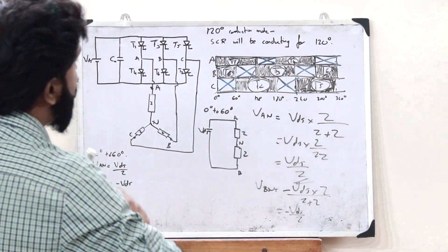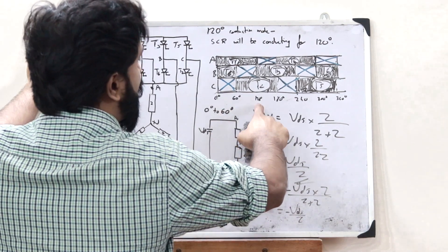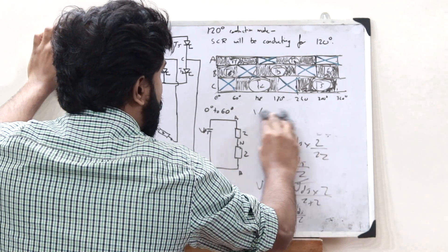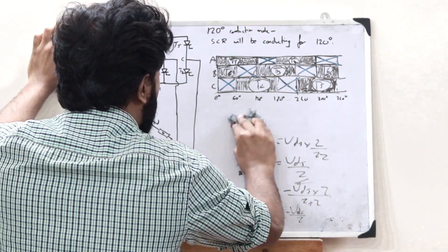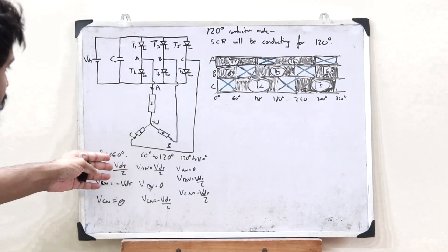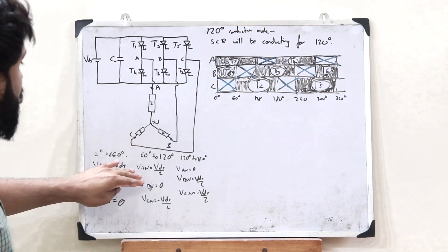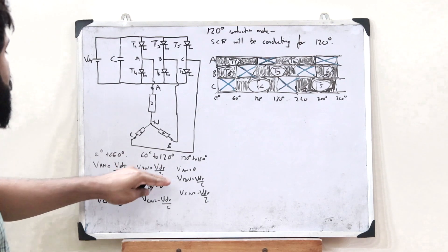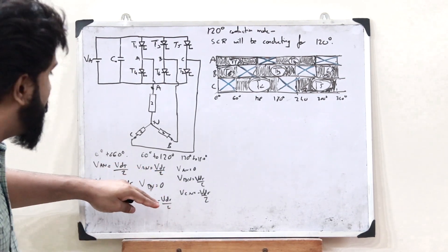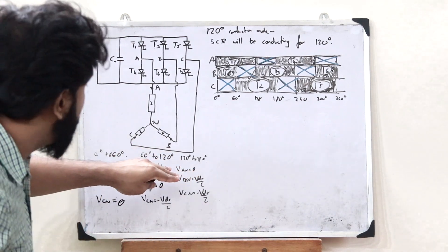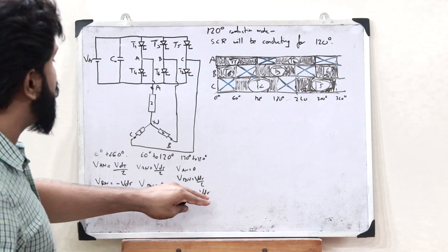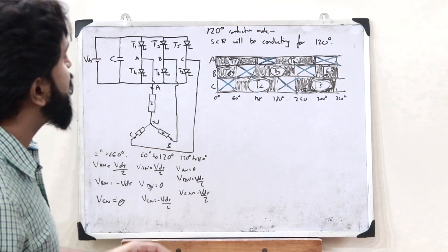Similarly, we can find the values for all other intervals. From 60 to 120 degrees: VAN = VDS/2, VBN = 0, VCN = −VDS/2. From 120 to 180 degrees: VAN = 0, VBN = VDS/2, VCN = −VDS/2. We can get the other values similarly for the remaining intervals.